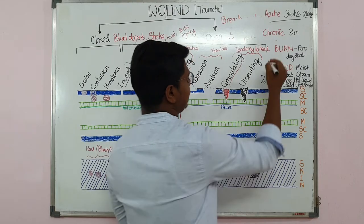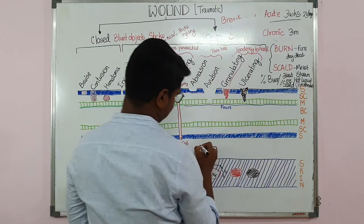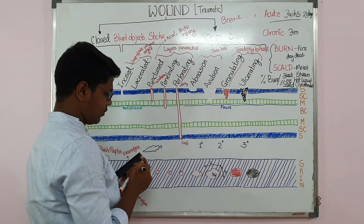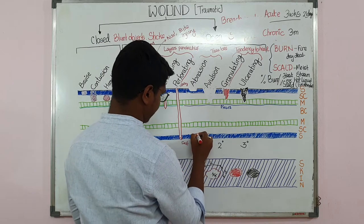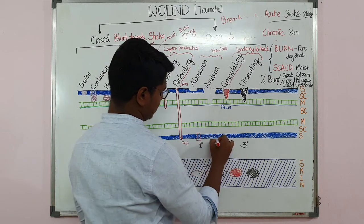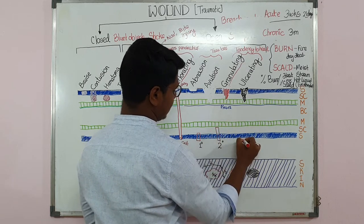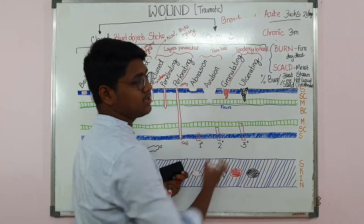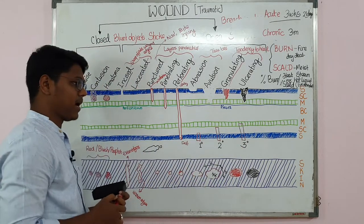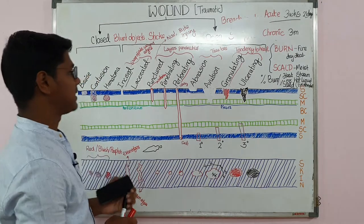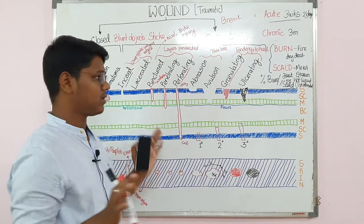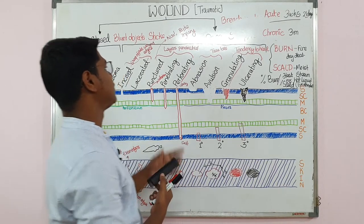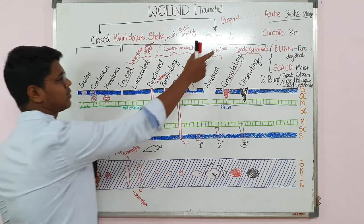In burns and scalds there are three degrees. In first degree, only the skin is affected. In second degree, the skin and subcutaneous tissues are affected. In third degree, the skin, subcutaneous tissue, and the muscles are affected. Remember first, second, and third degree burn — you may write this in your report. This comes as a long question in examinations, especially in principles of surgery, or it may come as a short note.